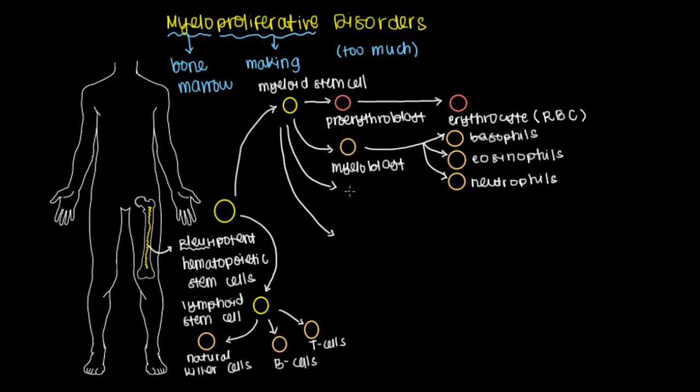Another lineage that you can have dividing off of the myeloid stem cell is through the monoblast. And this guy, which you may be able to guess, will divide into this cell right here, which is known as a monocyte.